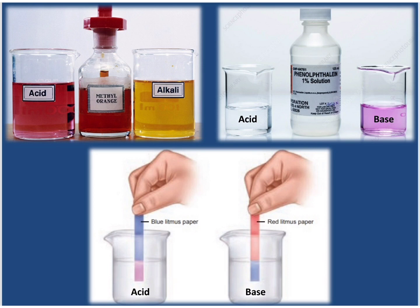These indicators are used in chemical laboratories. But apart from these we also have some domestic indicators which are naturally available. For example, turmeric or haldi. You must have noticed that after eating food when we wash our plates with soap, if there is a haldi stain on the plate it will automatically turn reddish in color. So we can understand that turmeric is a type of natural indicator.